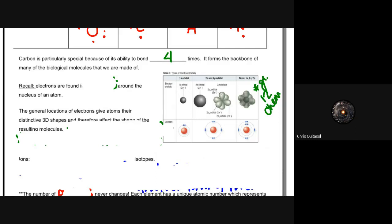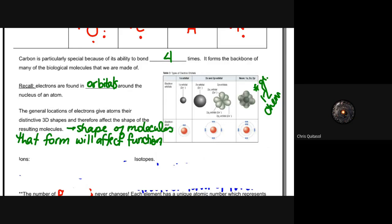So recall that electrons are found in the orbitals around the nucleus of an atom. Those orbitals contain those valence electrons, and electrons as a whole and how they are located will help impact how it behaves. So the general location of atoms—or of electrons—in an atom give its distinct 3D shape and will affect the way that those molecules form shapes.